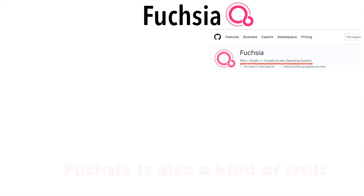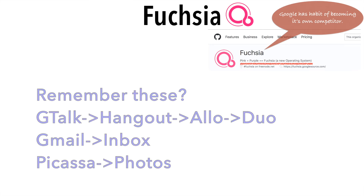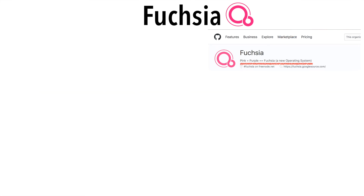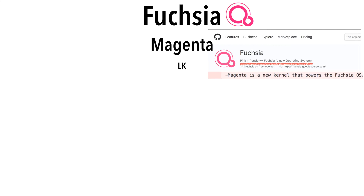People were wondering, after Chrome and Android, what was Google trying to do with this. All I can say is that Google has a habit of becoming its own competitor. The kernel of Fuchsia was a new kernel called Magenta, which is actually a spin-off of another kernel called LK, which stands for Little Kernel.